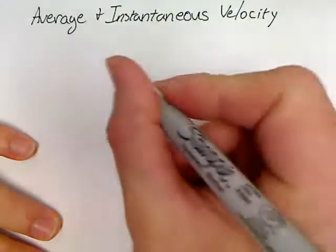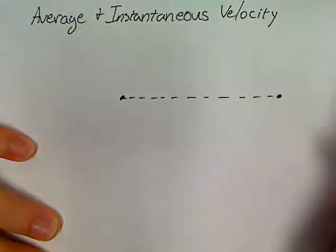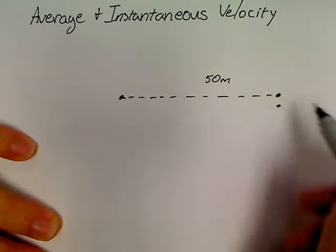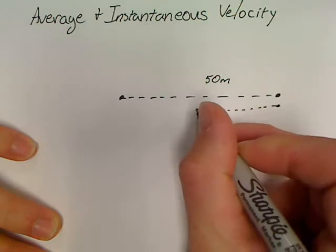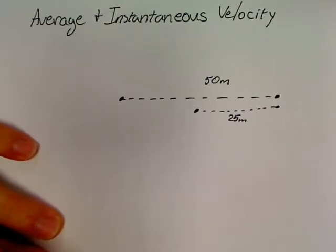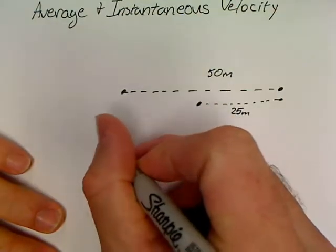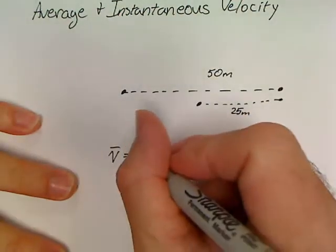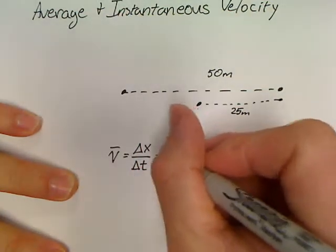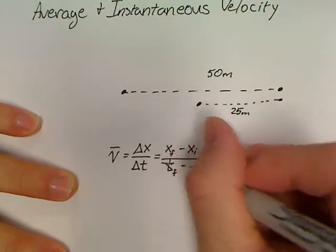So, we'll start off here at some point. We will travel 50 meters. And when we get to this point, we're going to actually turn around and come back 25 meters. Now, let's first talk about the difference between average velocity and average speed. Average velocity is nothing but your change in displacement over your change in time, which is written as XF minus Xi over time final minus time initial.